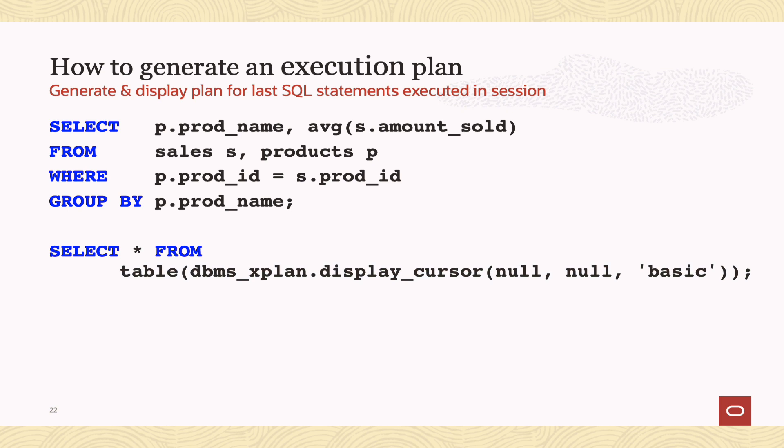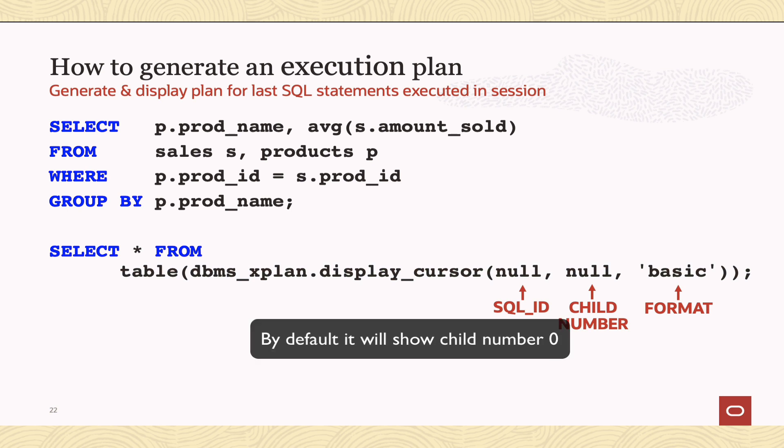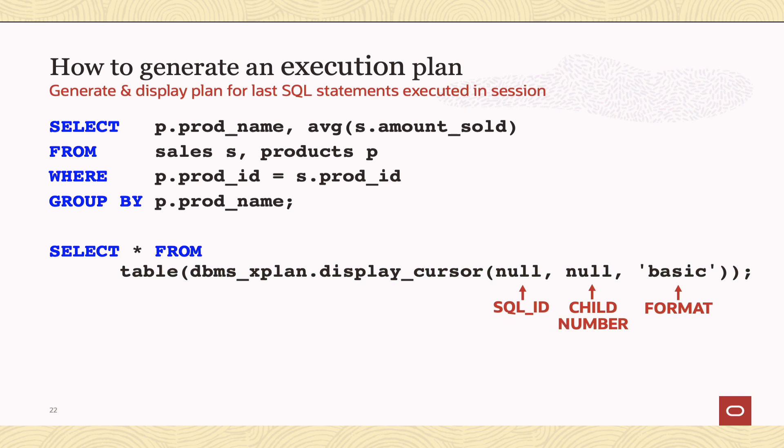But if you don't want to do that, if you don't want to execute the SQL statement because you know it's already been executed by somebody else, you're going to need two additional pieces of information to show the plan. You'll need the SQL_ID, which we can grab from V$SQL and the child number. By default, it always shows you child zero for that plan. So you are going to need to supply that child number. And again, the third parameter there is format.